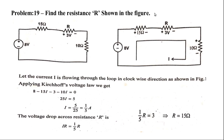Next is Problem 19: find the resistance R shown in the figure. Redrawing the circuit with current I flowing clockwise, and marking polarities plus-minus on each element for clarity.